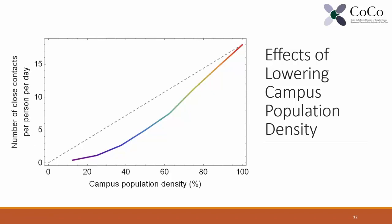The diagonal reference line represents a case where a 1% reduction in population density results in a 1% decrease in close contacts. As shown in the plot, the initial portion of the curve drops much steeper than the reference line, meaning that up to a certain point, a 1% reduction in population density yields more than a 1% reduction in close contacts. Beyond that point, the efficiency diminishes. This suggests that the rational decision-making point may be around 45% population density.